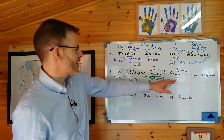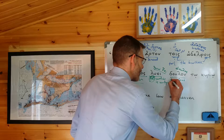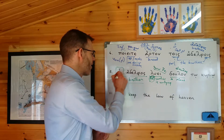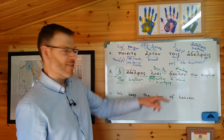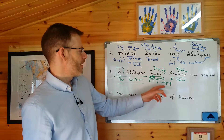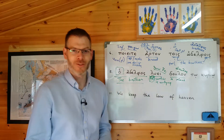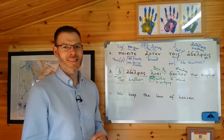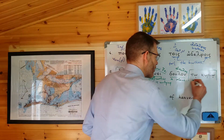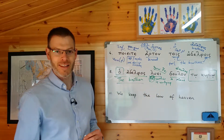So the brother unties or is untying a slave. Notice there is an article here — ho adelphos, 'the brother' — but there is no article on dulon. It is not a particular slave who is being untied; the brother is untying or unties a slave. So verb, subject, object — all done safe and sound. What is left in this sentence to have a crack at? And of course you've got this little bit at the end: tō kuriō. You've got to identify what it is and then figure out what it's doing in the sentence.